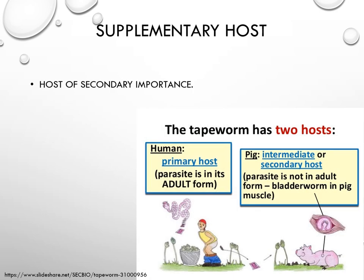Next we discuss the supplementary host, also called the host of scanty importance. In tapeworms of pigs, the primary host is the human being, while the intermediate or supplementary host is the pig. These tapeworms mostly form cysts — fluid-filled cysts — in the muscles or body of the pig, and the pig acts as the supplementary host.